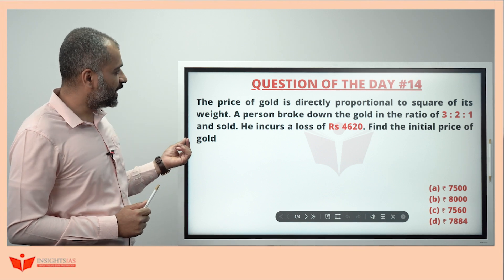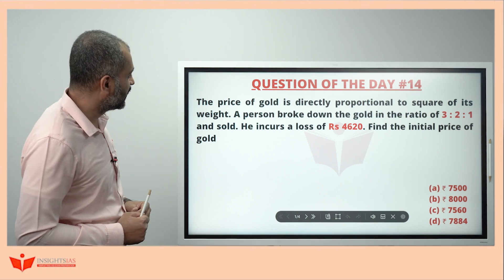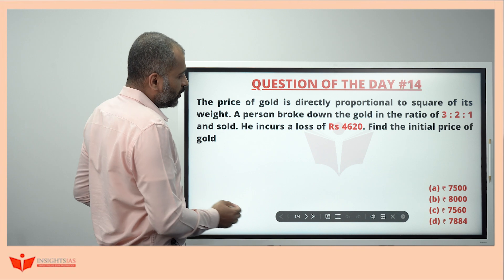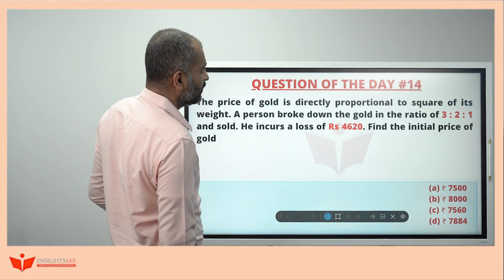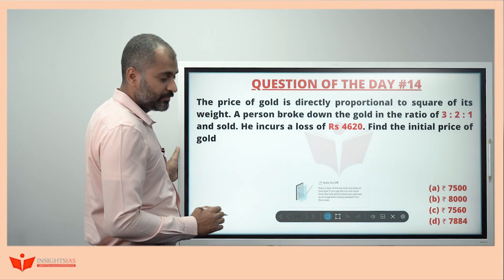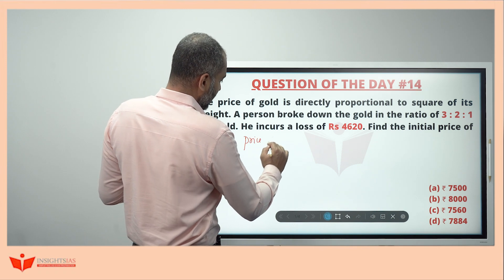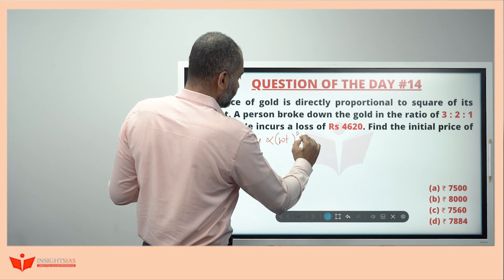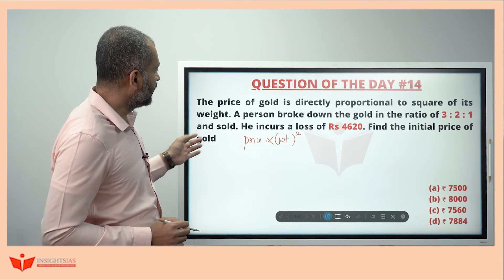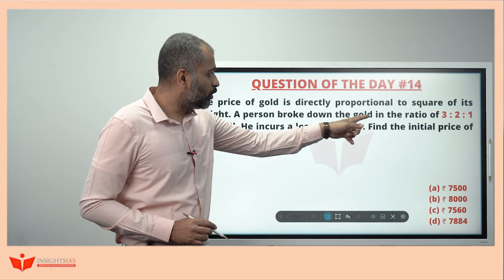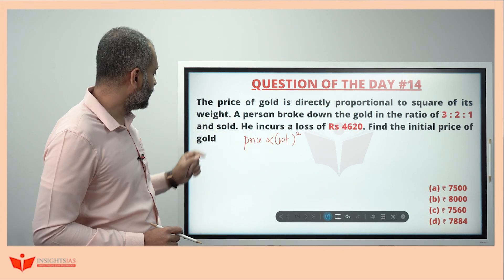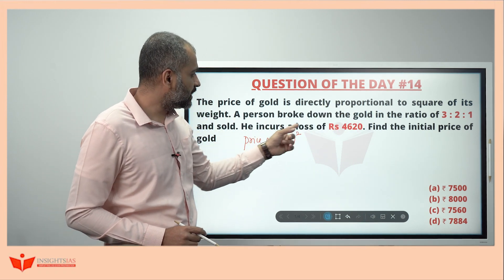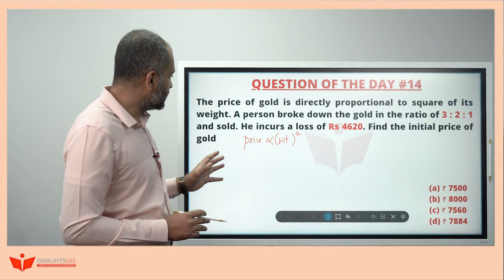This question is taken from the concept ratio. The price of gold is directly proportional to the square of its weight. A person broke down the gold in the ratio 3:2:1 and sold. He incurs a loss of rupees 4620.